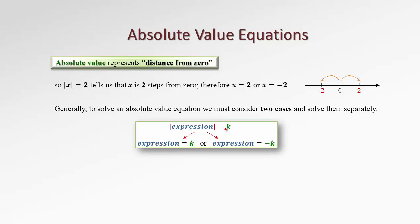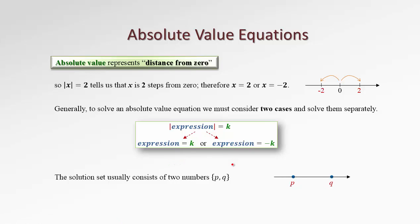So again, to solve this kind of equation, we drop the absolute value, but instead we split this equation into two cases. Copy the expression as it is, don't change anything, and say it's equal to k, or copy the expression without any change and it's equal to negative k. From these two possibilities, especially if those expressions are linear, we should expect exactly two solutions — one from each branch. So we expect two numbers on the number line being solutions to a linear absolute value equation like this.